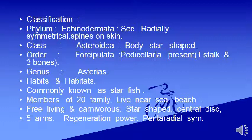Genus: Asterias. Habit and habitat: commonly known as starfish. Members of 20 families are known. They live near sea beaches, are free living and carnivorous. Body is star-shaped with a central disc and five arms. Great regeneration power is present and pentaradial symmetry is present.